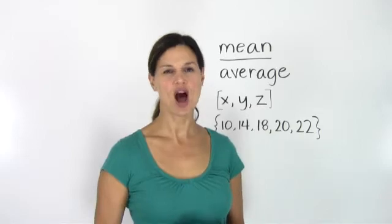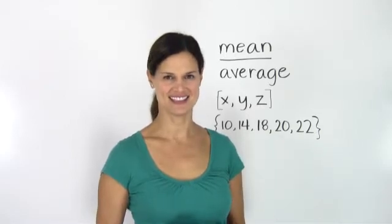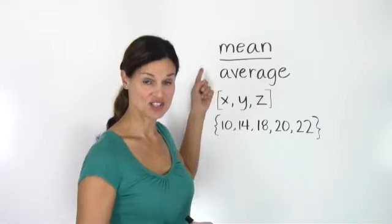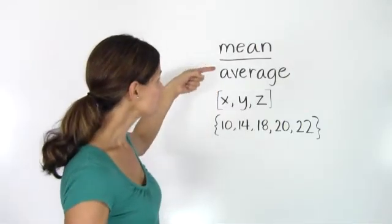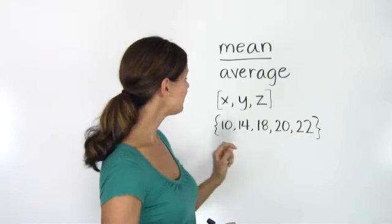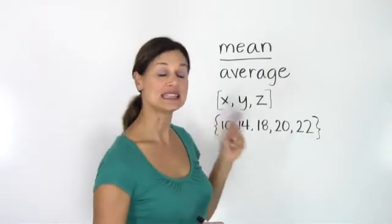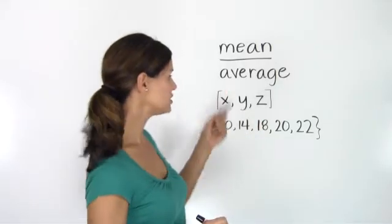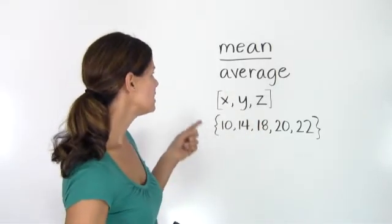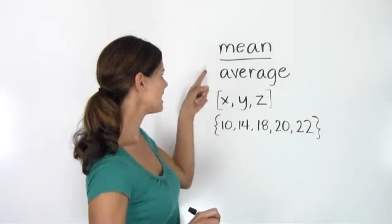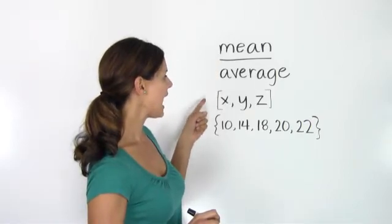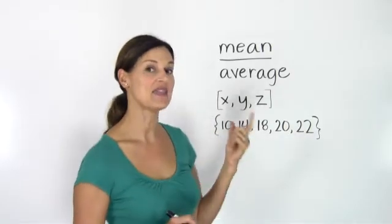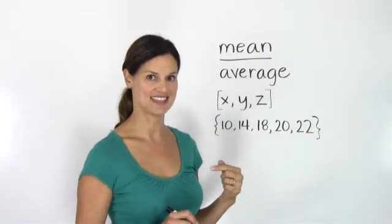Mean is the most common method of central tendency, also known as average. Mean involves taking the whole range of data and finding a number that relates equally to all of it, even if that number is not in your set of values. We calculate mean by adding up the total set of values and dividing by the number of values in the set.